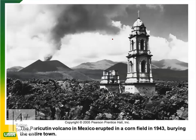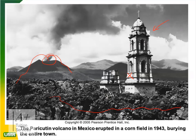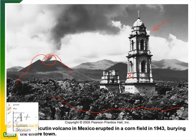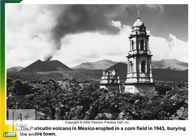The Parícutin volcano in Mexico erupted in a cornfield in 1943, burying an entire town. You can see the top of a church tower sticking out, with volcanic material covering all the buildings. After the eruption all the material flowed out covering and burning everything in its path. The smoke means the volcano just finished erupting — toxic gases are still being released, adding to the greenhouse effect.